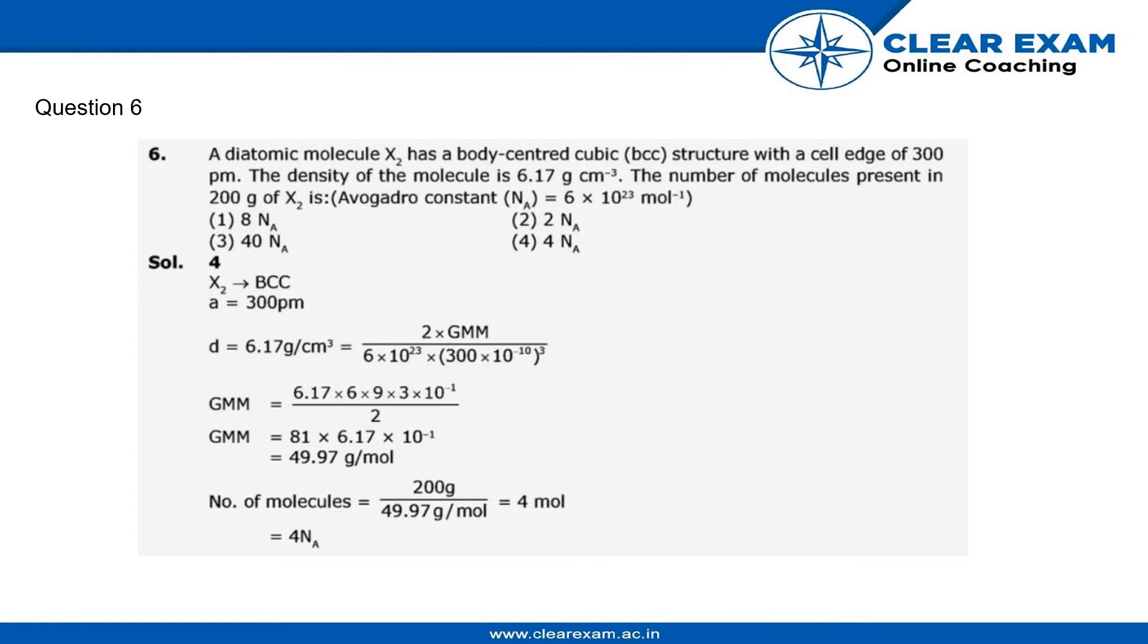The question here is: a diatomic molecule X₂ has a body-centered cubic (BCC) structure with a cell edge of 300 picometers. The density of the molecule is 6.17 grams per centimeter cubed. The number of molecules present in 200 grams of X₂ is what we need to find.